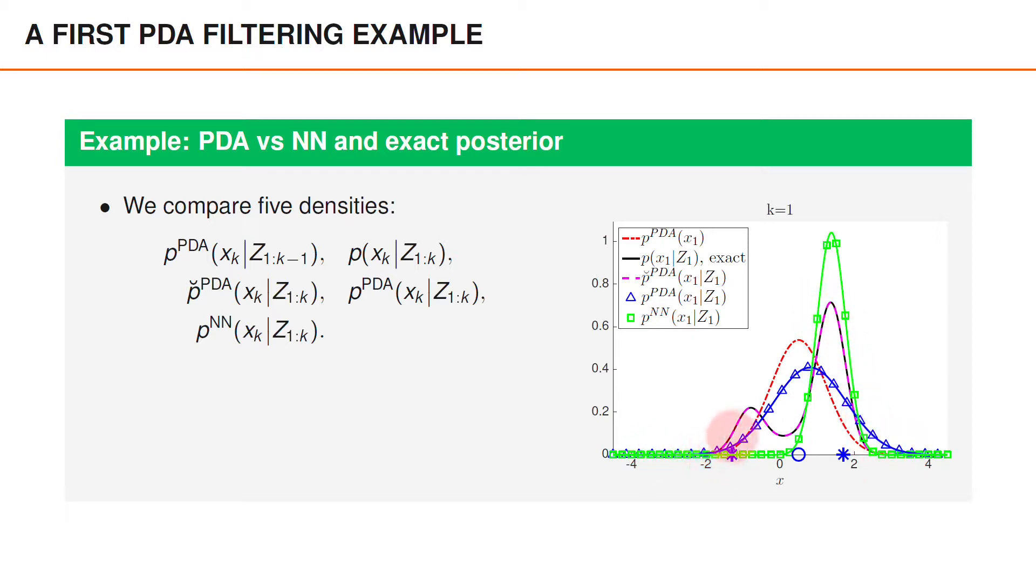Finally, we have the posterior according to the PDA filter, which is a blue curve marked with triangles, and the posterior according to the nearest neighbor filter, which is the green curve marked with squares. Like before, the Mk measurements are illustrated using blue stars on the x-axis.